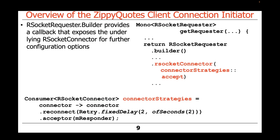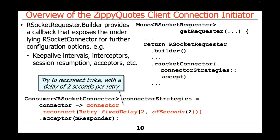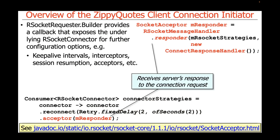The connector strategies have two parts. They have a reconnect strategy — if we can't establish a connection or the connection has dropped, then try twice with a delay of two seconds for each retry. The other thing we do is set up an acceptor to handle connection requests coming back in from the server.